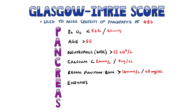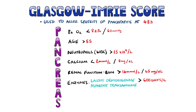Next, we have E for enzymes, which include lactate dehydrogenase levels above 600 units per litre, and aspartate transaminase levels above 200 units per litre. The second A stands for albumin levels below 32 grams per litre.